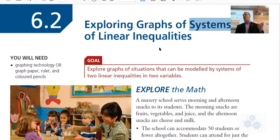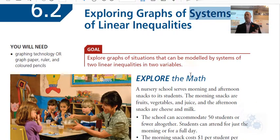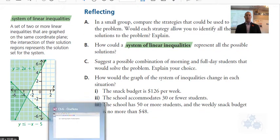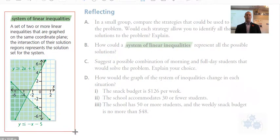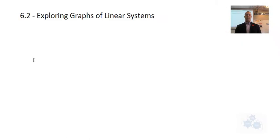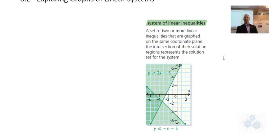As mentioned in the chapter opener, systems of linear inequalities are where two or more linear inequalities are graphed at the same time on the graph, and the solution to the system is where the graphs overlap. So I'm just going to show you this definition with the diagram here, so you want to summarize this into your notes what a system of linear inequalities is. It says a set of two or more linear inequalities that are graphed on the same coordinate plane. The intersection of their solution regions represents the solution set for the system.